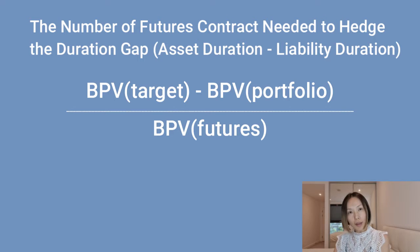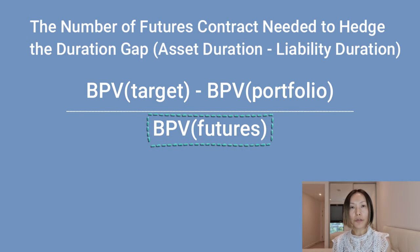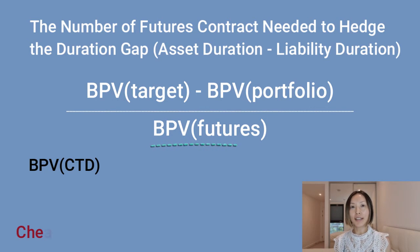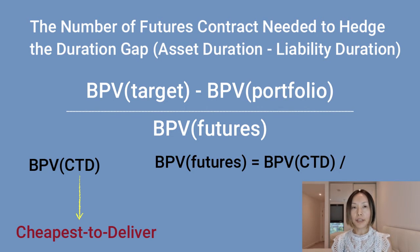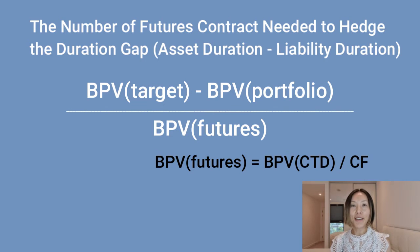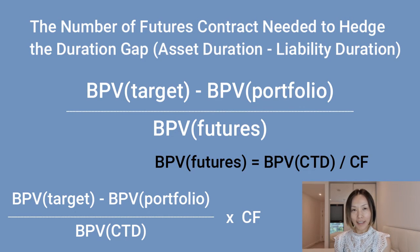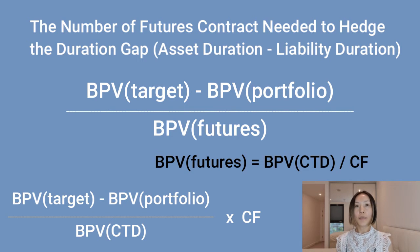One thing to note: sometimes the exam problem gives you the actual BPV of the futures contract, but sometimes it gives you the BPV of the CTD bond — the cheapest-to-deliver bond. In that case, you calculate the BPV of the futures contract by dividing the BPV of the cheapest-to-deliver bond by the conversion factor. So the equation becomes: target BPV minus existing portfolio BPV, divided by the BPV of the cheapest-to-deliver bond, then multiplied by the conversion factor.